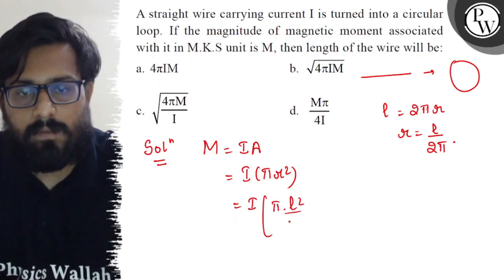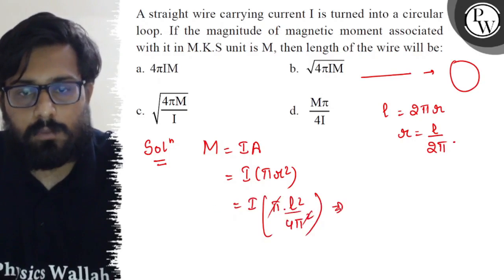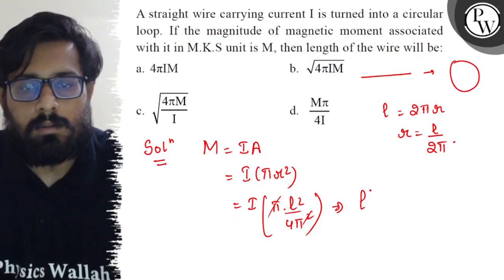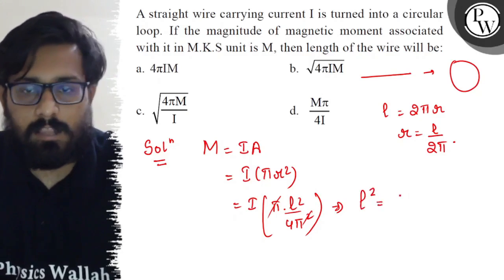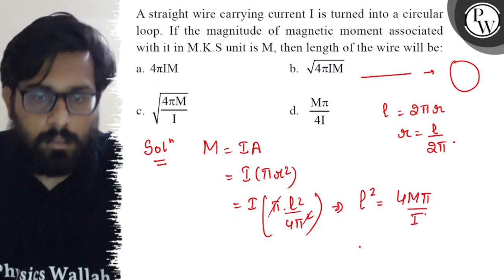One π cancels out with π in the denominator, so the value of L² comes out to be nothing but 4Mπ/I.